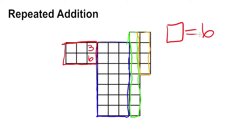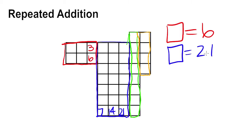Let's look at the columns of the blue rectangle. I know I have 7 squares in the first column, 7 more in the second column for a total of 14, and an additional 7 in the third column for a total of 21 squares. The area of the blue rectangle is 21.